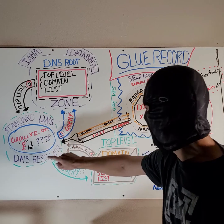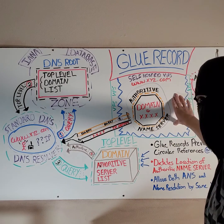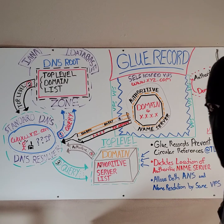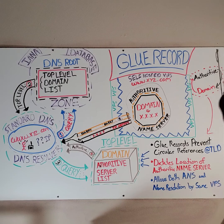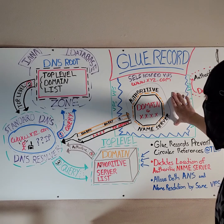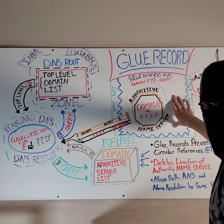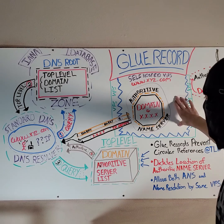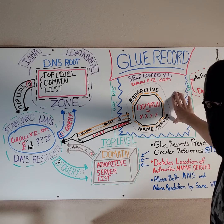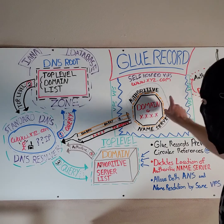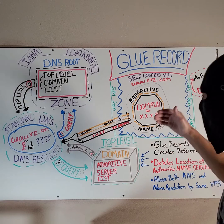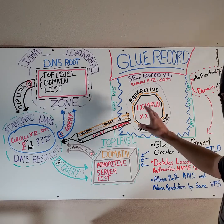Now our last request is going to head off to our authoritative name server. Here's where Glue records come into place and where we can run into what's called a circular reference issue. What happens is when you have a self-hosted virtual private server and you're running both the DNS service and also acting as the authoritative domain server on the same server, you can basically go back and forth looping over and over again because it can't tell where the DNS is without a little extra help.